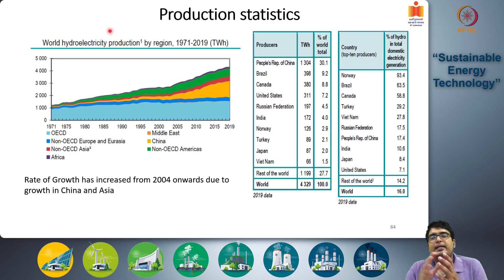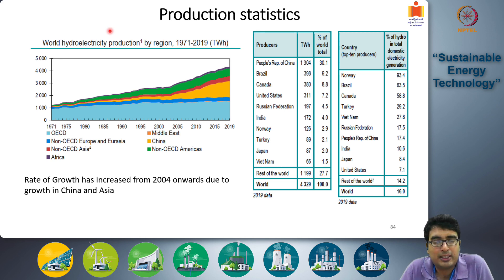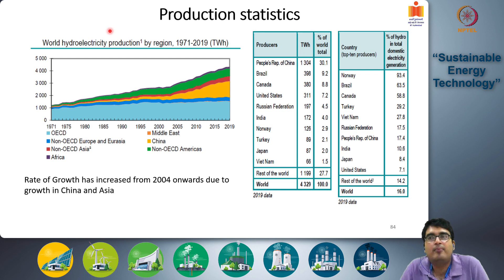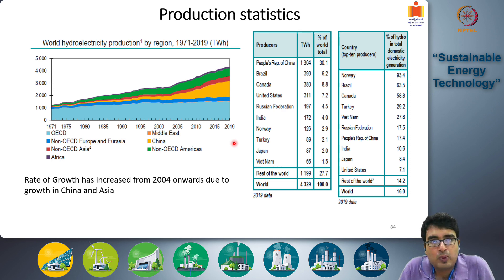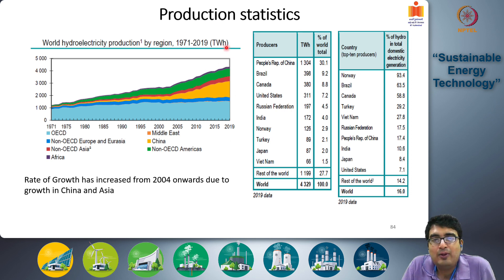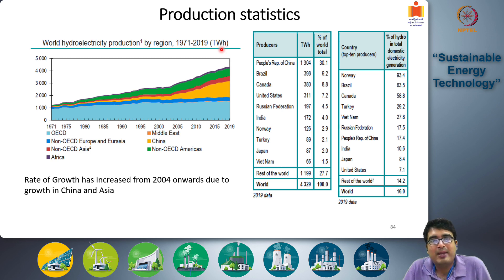This figure comes from an International Energy Agency yearly report on the status of various electricity and energy generation technologies. It charts the production of hydroelectricity — electricity from moving water essentially — between 1971 and 2019, giving us more than 50 years of data on how much hydroelectricity has been produced worldwide per year. The values are in terawatt hours: kilo is 10 to the power 3, mega is 10 to the power 6, giga is 10 to the power 9, and tera is 10 to the power 12.